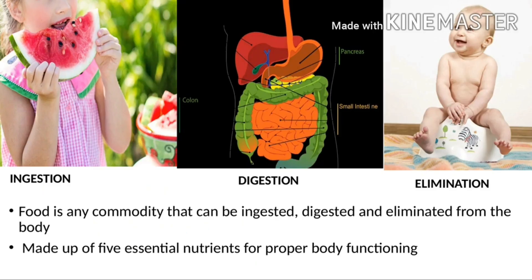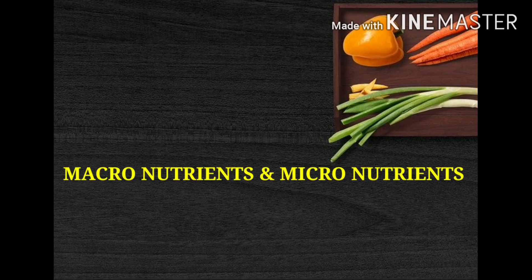Let's quickly see how we can define food. It is any commodity that can be ingested, digested, and eliminated from the body. As you can see, the process of ingestion, digestion, and elimination is shown in the above mentioned pictures. It is made up of five essential nutrients for proper body functioning.